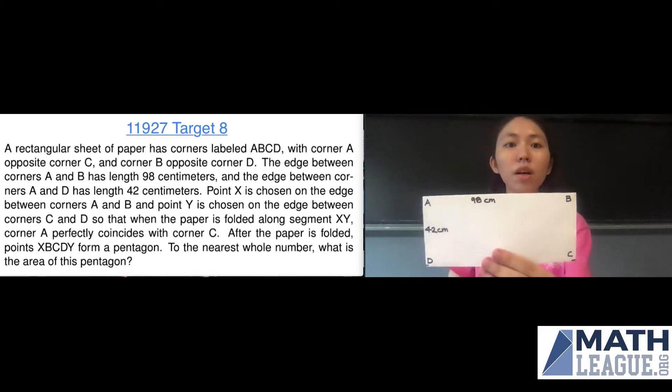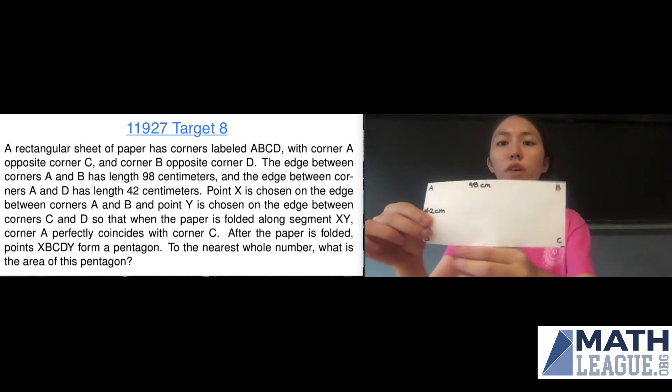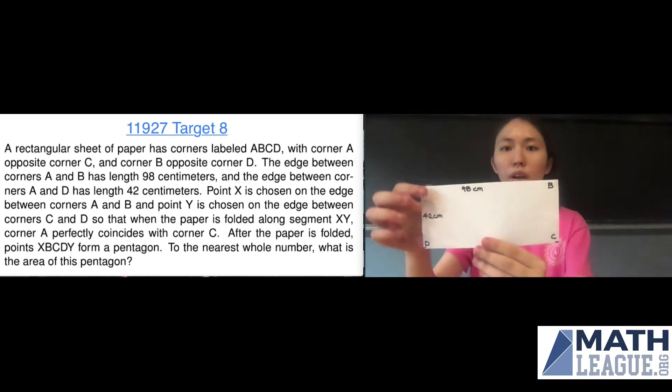Now point X is chosen on the edge between corners A and B, and point Y is chosen on the edge between corners C and D, which is the bottom edge, so that when the paper is folded along segment XY, corner A perfectly coincides with corner C.